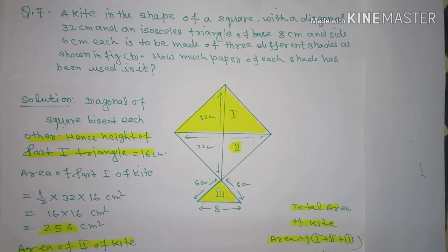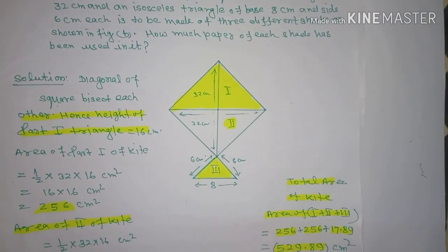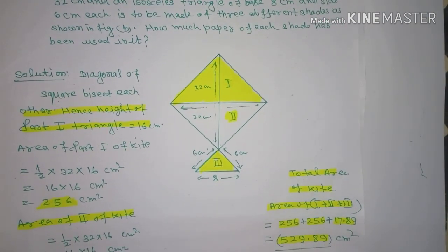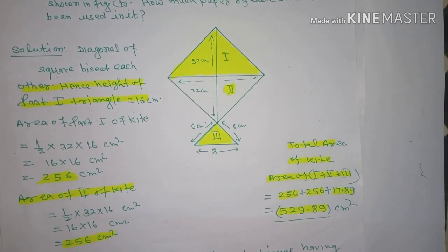Dostho, a square shape ki kite hai, jiske diagonal 32 cm hai. Aur kite ka base hai, woh ek isosceles triangle hai, jiske base 8 cm aur dono sides 6 cm each hai. Humko find out karna hai kitna har shape mein kitna paper use hoga.